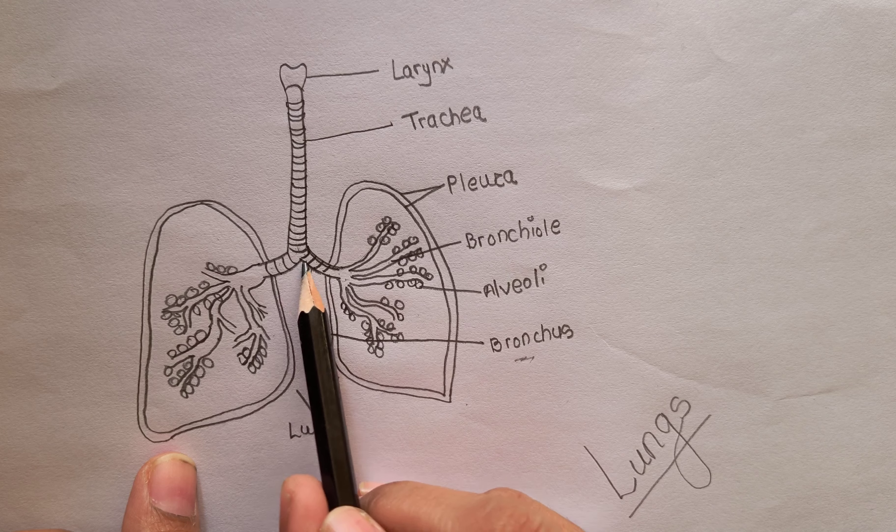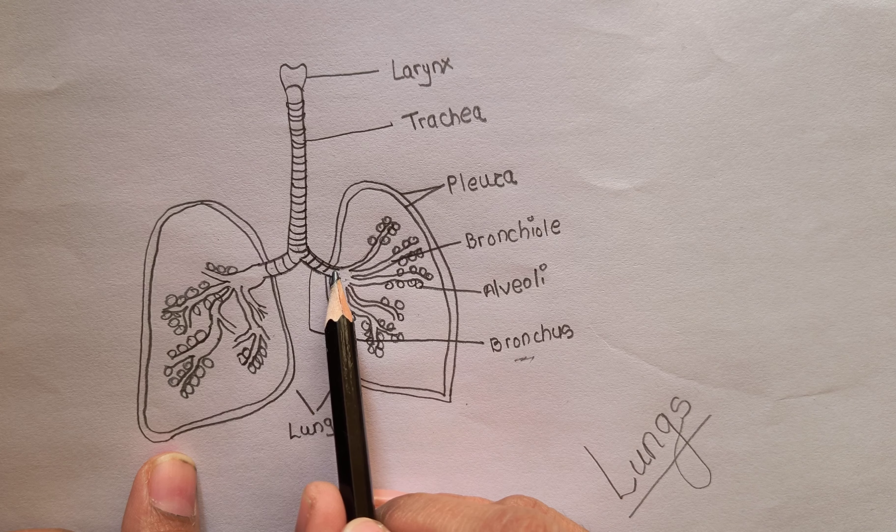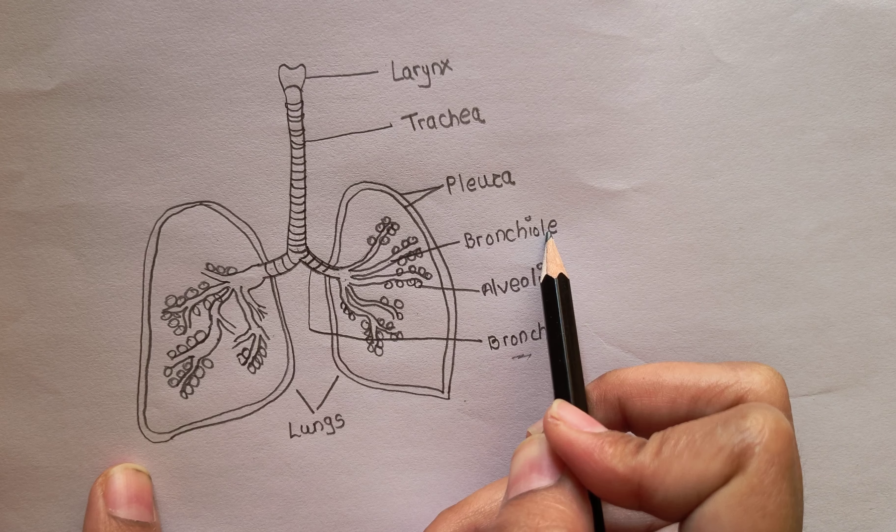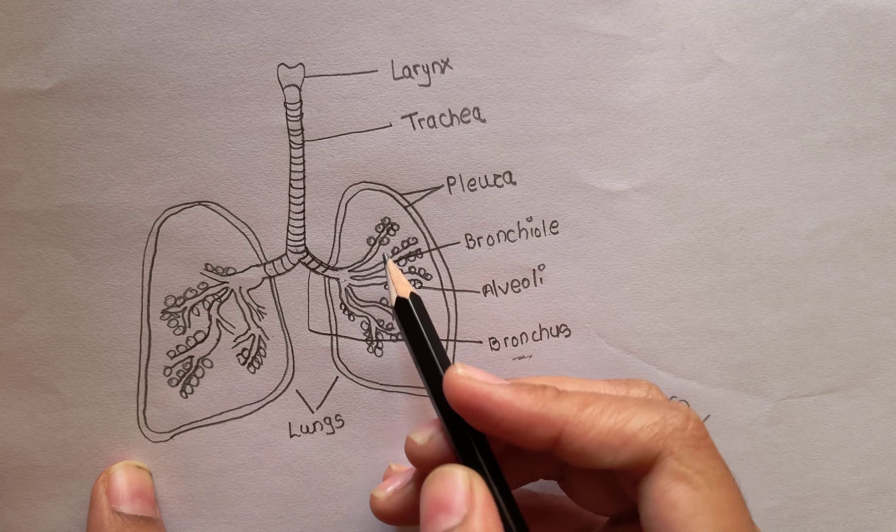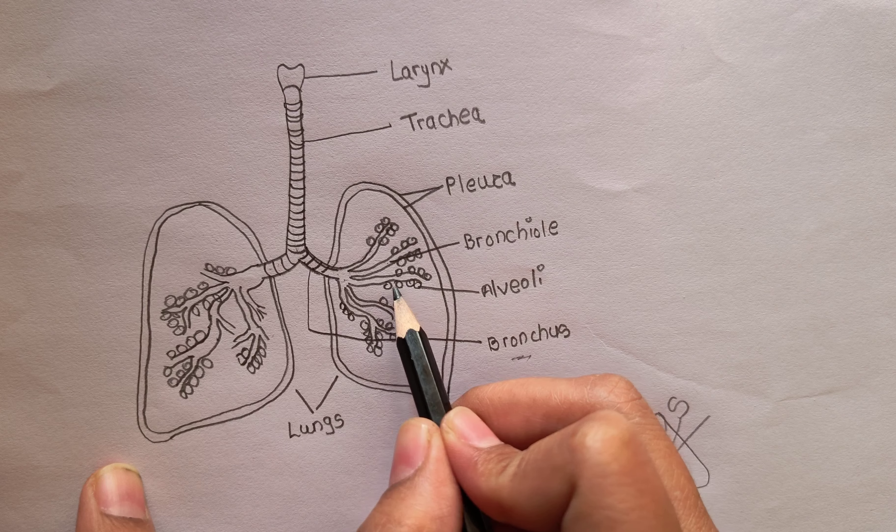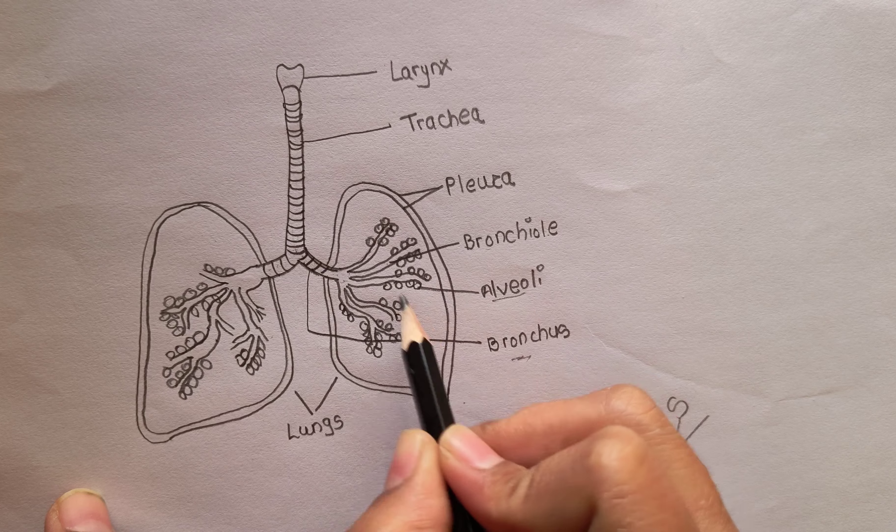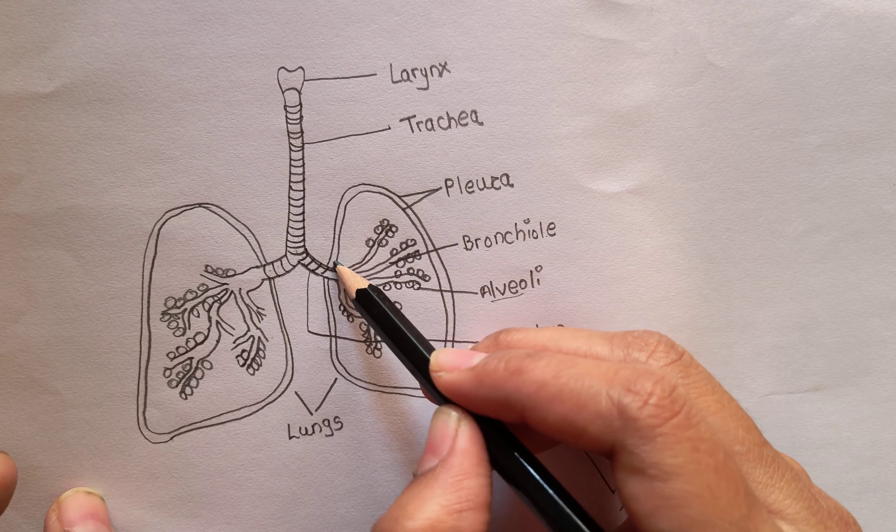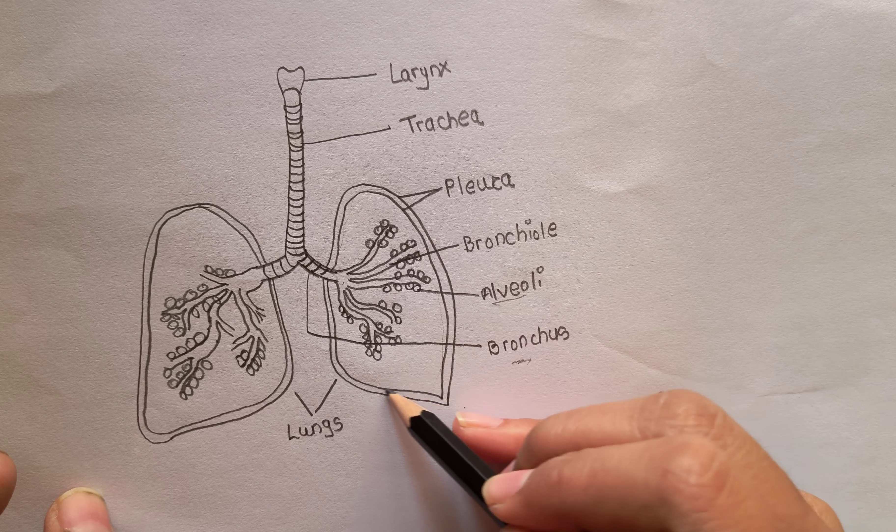These are two bronchules, and then bronchules continue to divide into the bronchioli. And then that contains the small rounds which are the airbags called alveoli, and that is covered with two layers on the outer part.